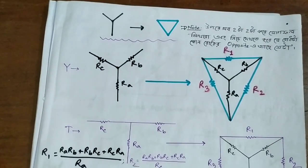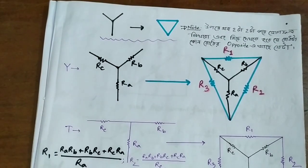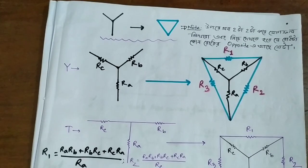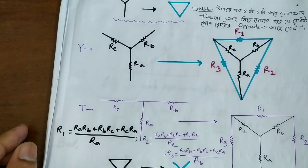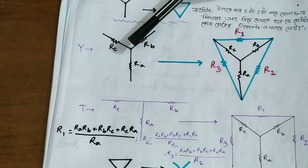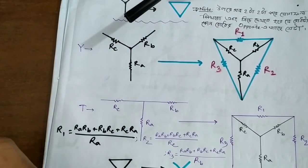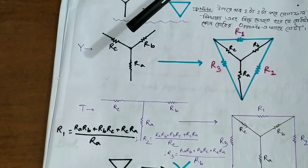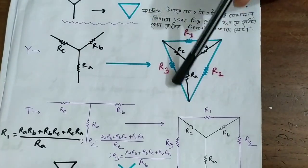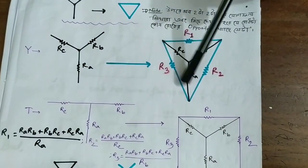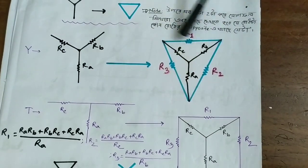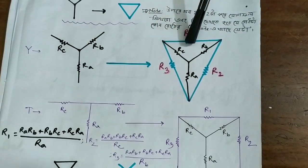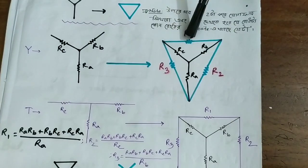We are going to work through a question about a kind of circuit — a circuit with a wire motor. We will do a question to get the answer. The answer involves R1, R2, and R3.